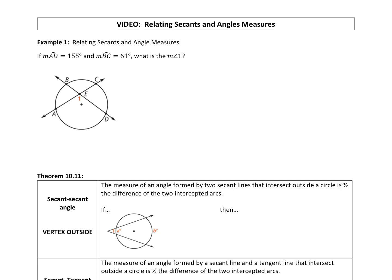Example one: if the measure of arc AD is equal to 155 degrees — arc AD is a minor arc, that is 155 degrees — and the measure of arc BC is 61 degrees, so arc BC goes from B to C at 61 degrees. What is the measure of angle one?